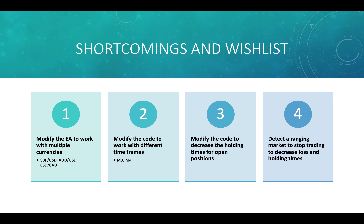Four goes kind of hand-in-hand with number three. We want to detect a ranging market to stop trading to decrease loss and holding times. A ranging market is a market in which price bounces between a specific high price and a specific low price. This follows support and resistance — the high price represents resistance, and the low price represents support, and the price can never break through these values. A characteristic of a ranging market is that it has horizontal movement. So right now, our EA is just conducting trades regardless of which direction the market is moving in. So if the EA can detect that the market is going in a bad direction, then it will avoid making trades that can lead to a lot of loss. Because of that, you would cut out unnecessary trades, which would lead to a better take-profit-stop-loss ratio, and therefore produce shorter holding times.